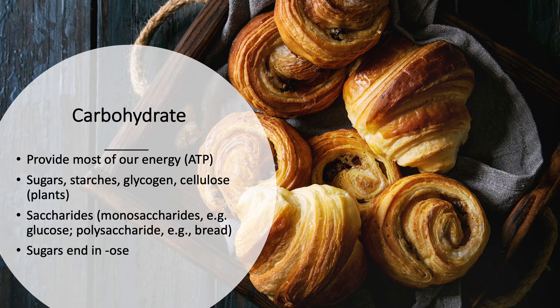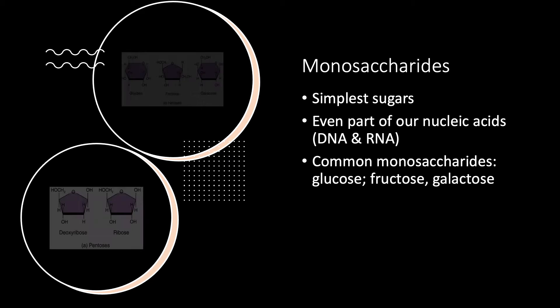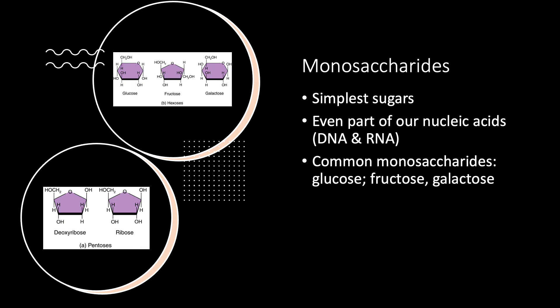Carbohydrates come in the form of sugars, starches, glycogen, and cellulose, which we get from plants. Anytime you hear the word saccharides, it's always going to refer to carbohydrates — like monosaccharides, which include glucose, the simplest form that cannot be broken down further, or polysaccharides like bread. Another clue: sugars always end in -ose, like fructose and lactose. Monosaccharides are the simplest sugars and are even part of nucleic acids — DNA and RNA are made up of these sugars.